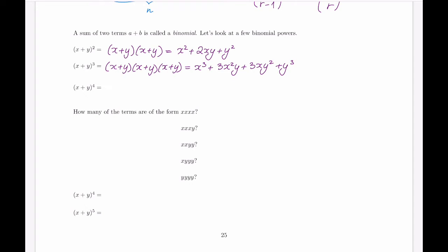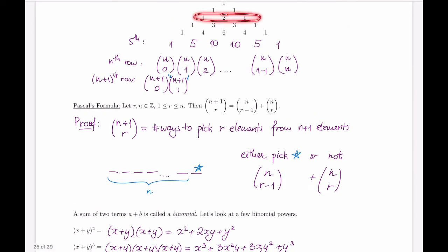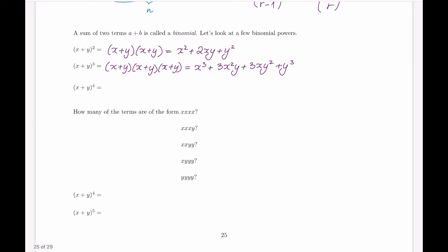This should start to look suspiciously familiar. If we read off the numerical coefficients, we get 1, 2, 1 for the square — which corresponds to a row of Pascal's triangle. The next one, 1, 3, 3, 1, corresponds to the third row of Pascal's triangle. So the pattern of coefficients of the binomial seems to continue this way.